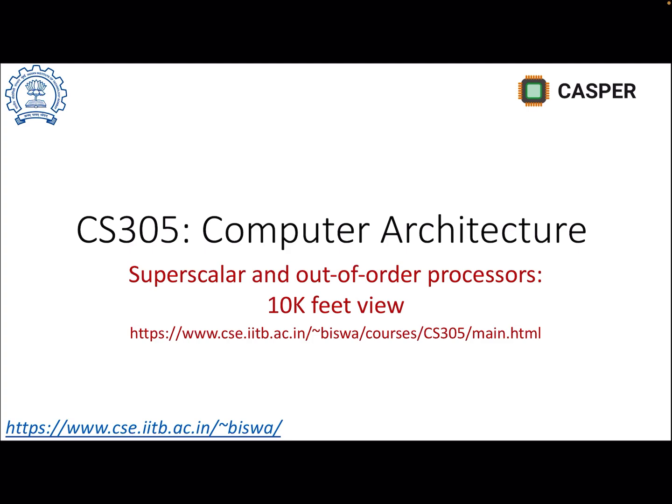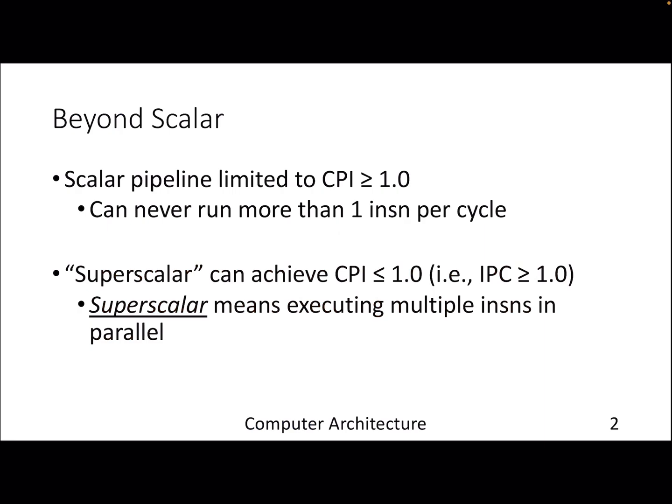In this video we'll be discussing the notion of superscalar processor and out-of-order processor. So far we have looked at a scalar processor in the form of a five-stage pipeline. Let's look beyond the pipeline design and how we can improve our IPC. In a five-stage pipeline the theoretical upper limit in terms of IPC is one — we can't pump more than one instruction per cycle, but in superscalar design we are trying to achieve an IPC of more than one.